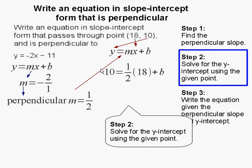So y is 10, m the slope is 1/2, 18 which is x gets substituted in, and that leaves b to be solved for.